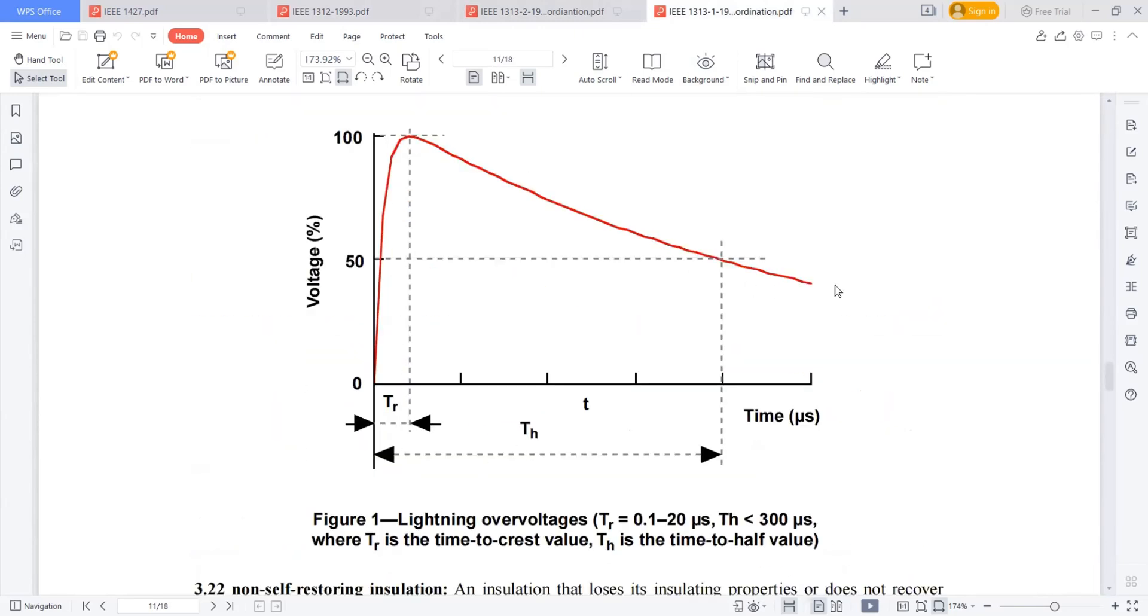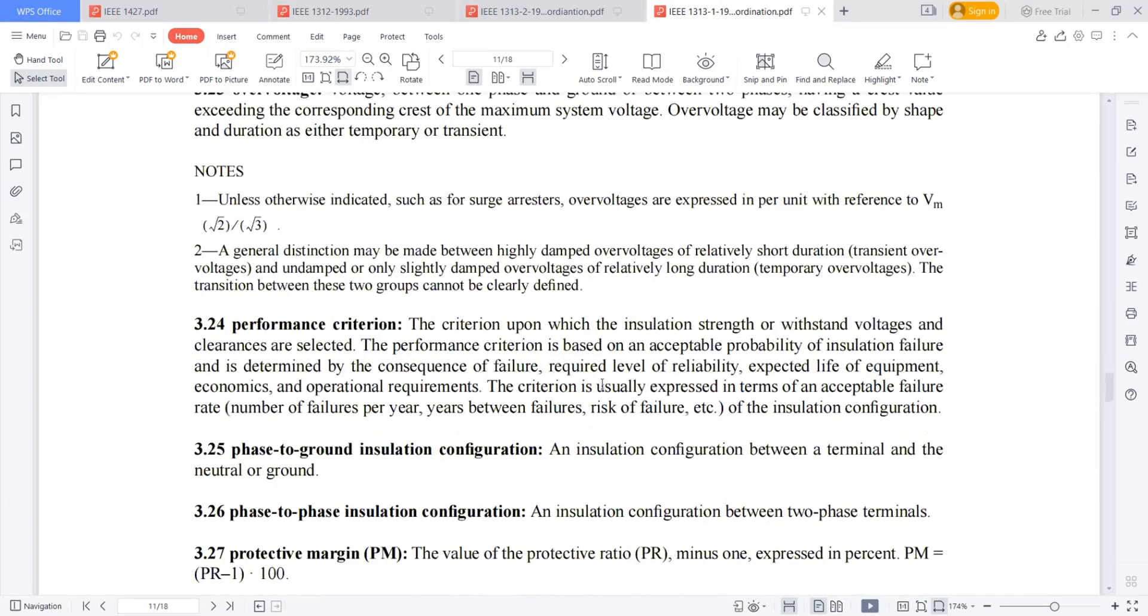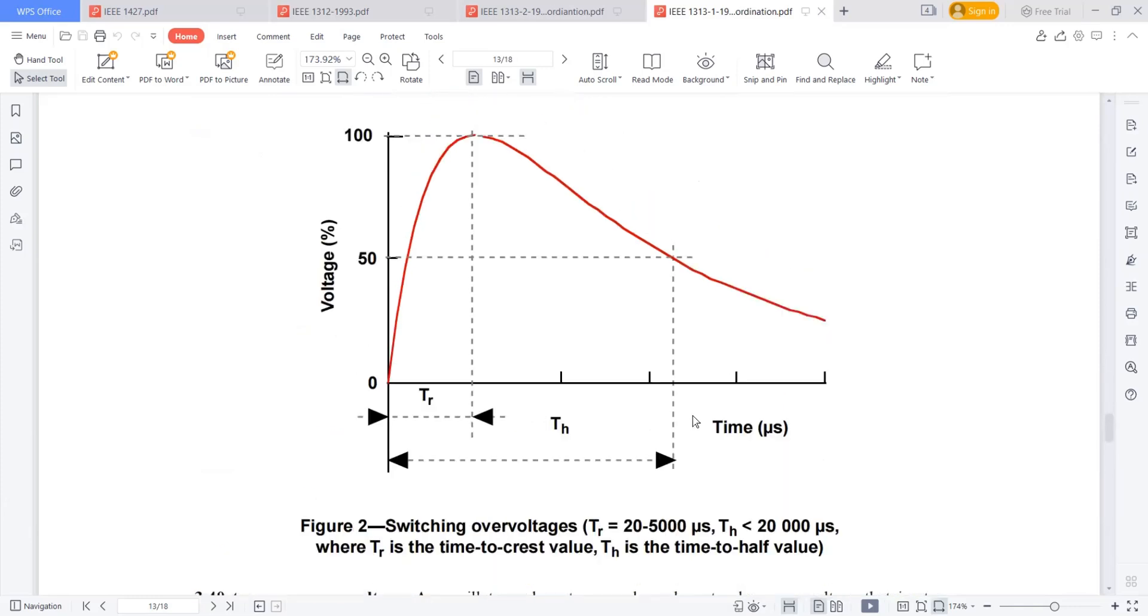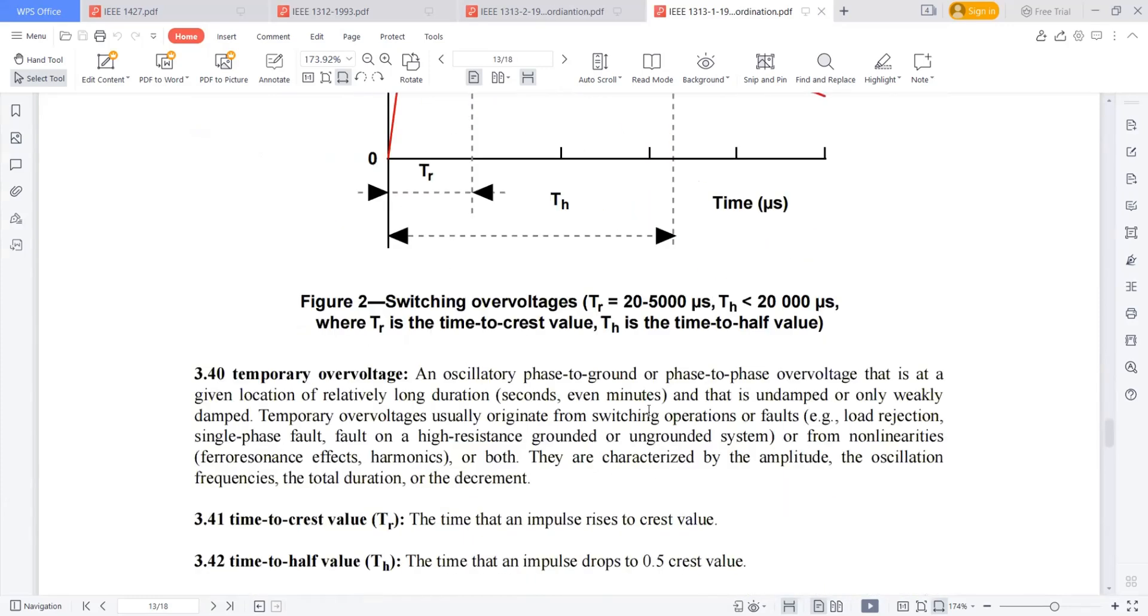So here you can see this curve. The rise time, if it is 0.1 to 20 microseconds and the tail time is less than 300 microseconds, we are calling it as lightning overvoltages. And the same characteristic with 20 to 5,000 and less than 20,000, then I am calling it as switching overvoltages.